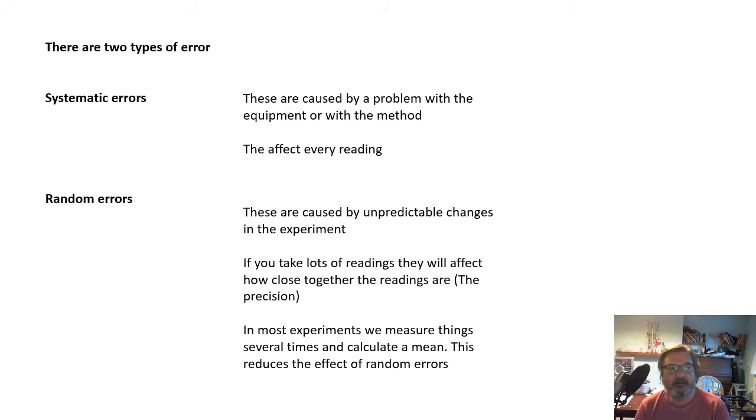Random errors are unpredictable. These are caused by unpredictable changes in the experiment, and they will affect the precision. It's like if we do the same thing again and again, we're not going to get exactly the same reading again and again. And this is because of random errors. They will affect how close together the readings are, which is called the precision of the readings.